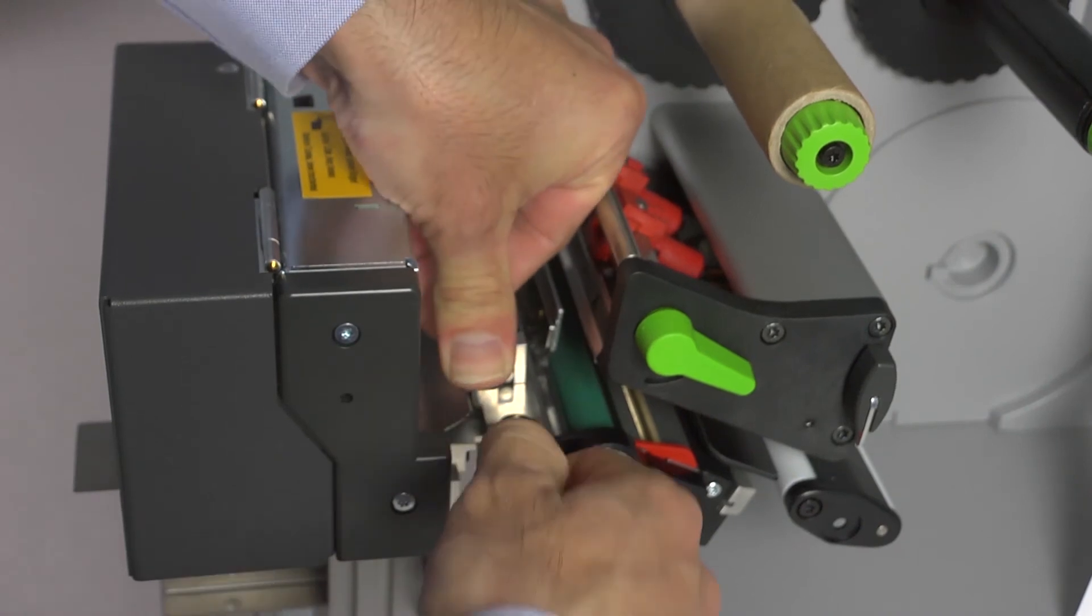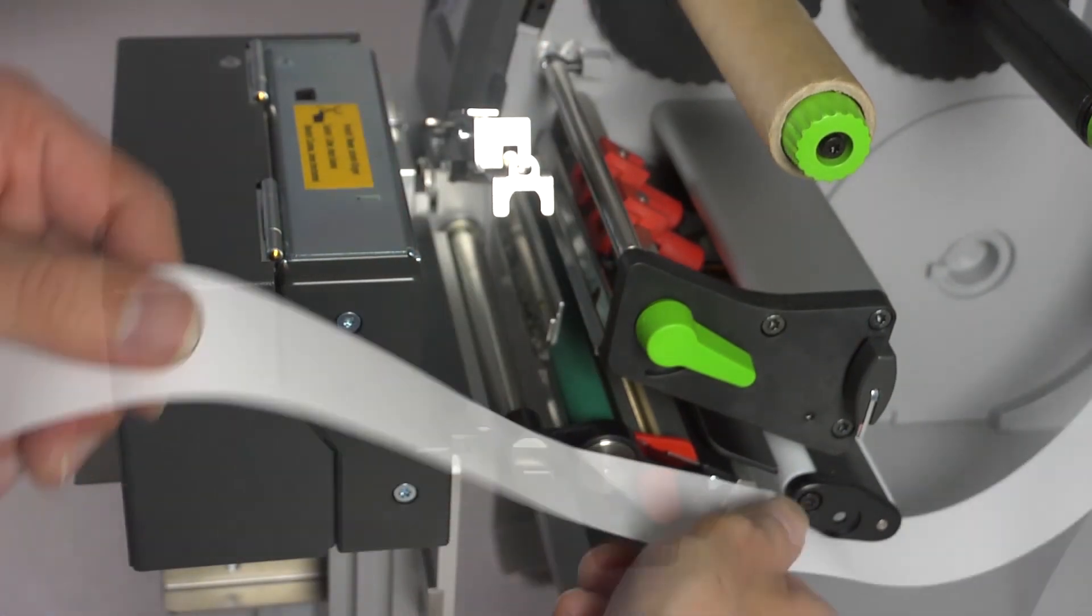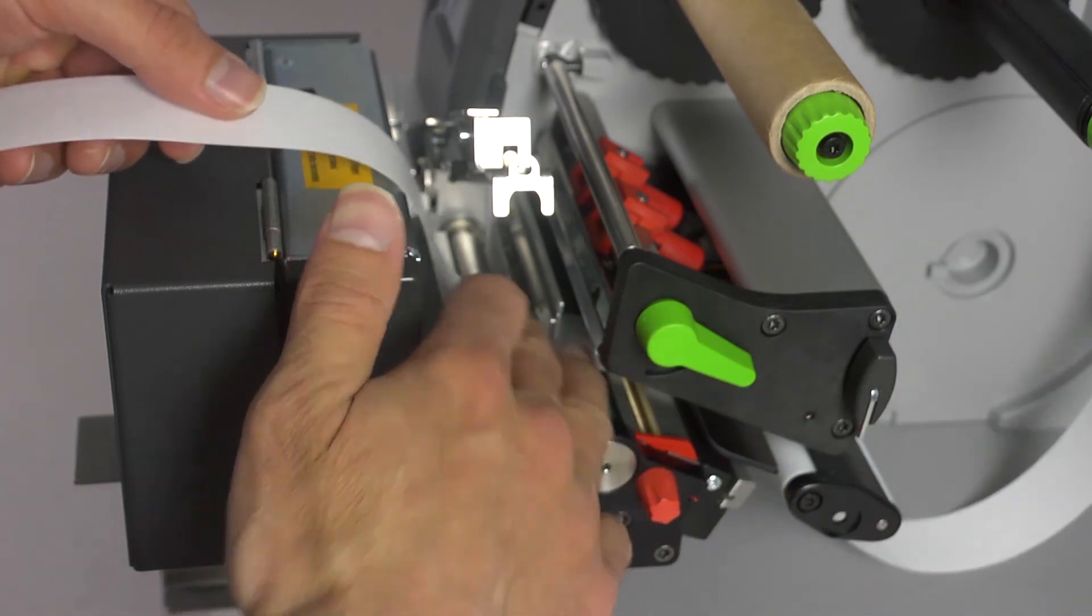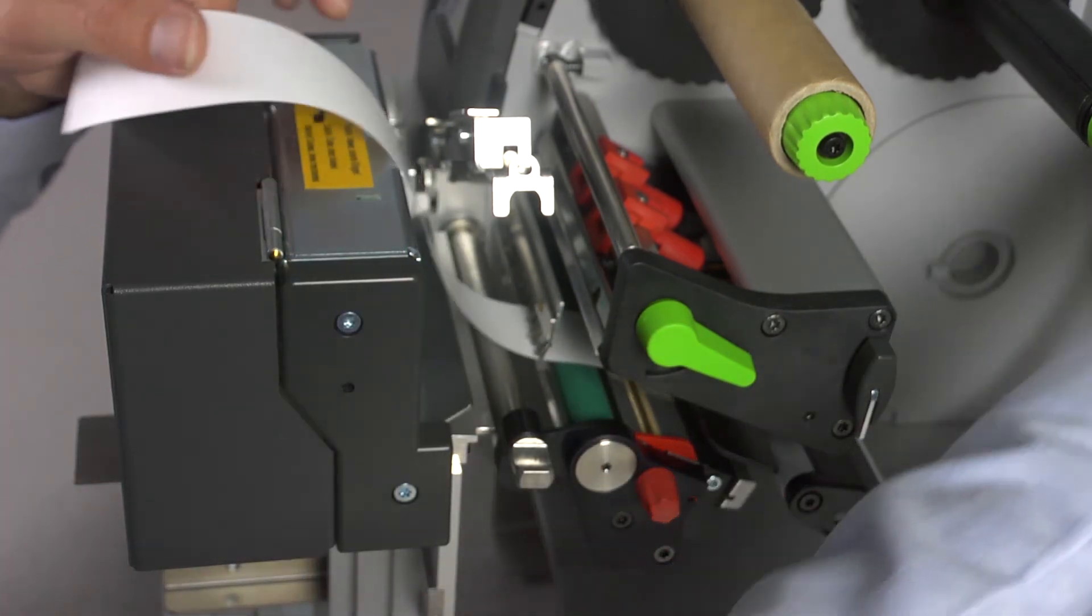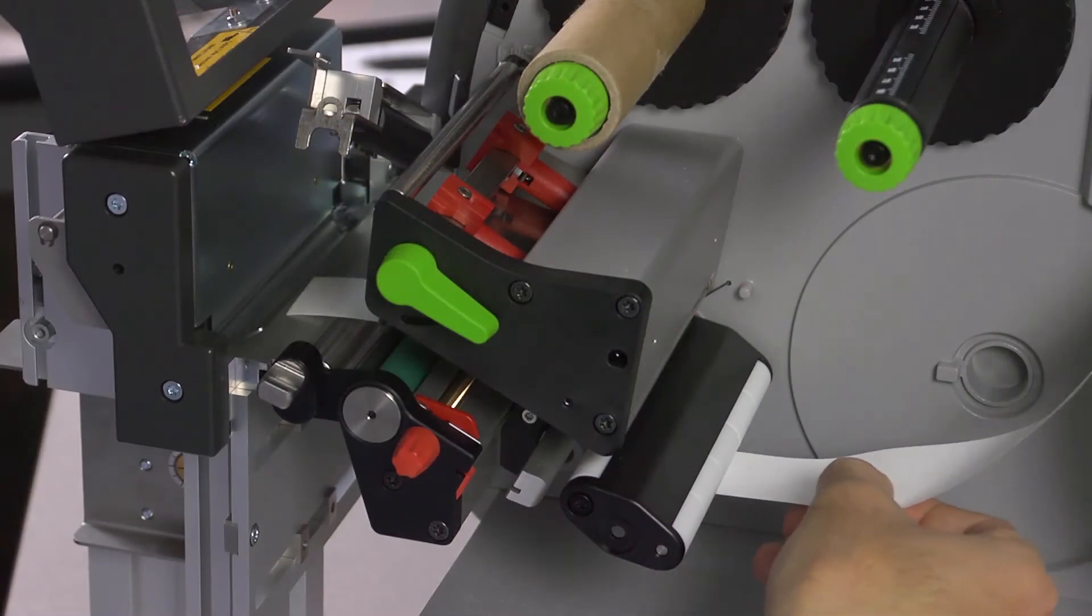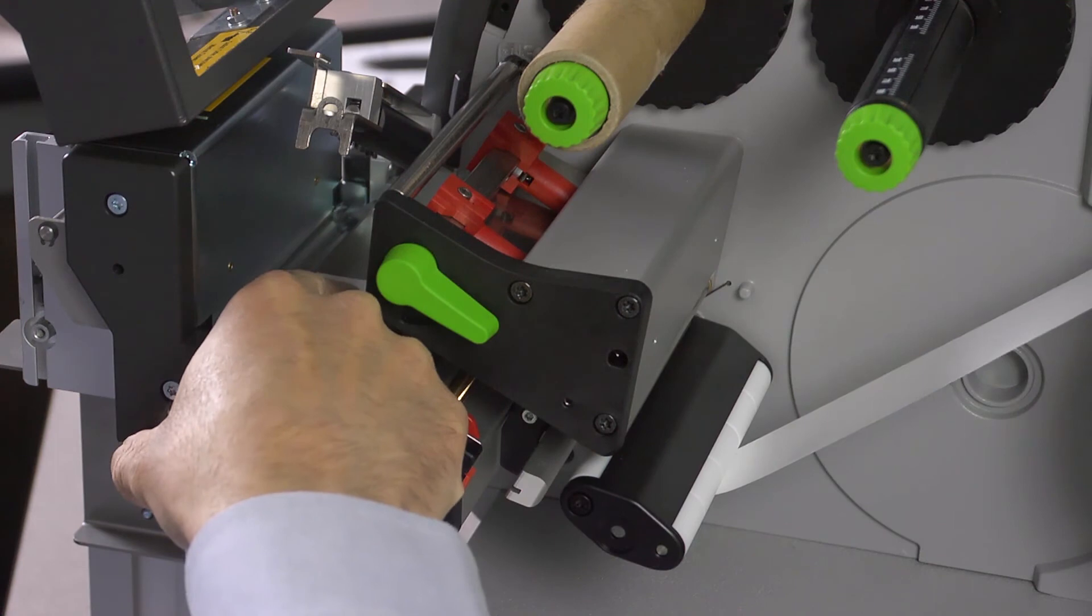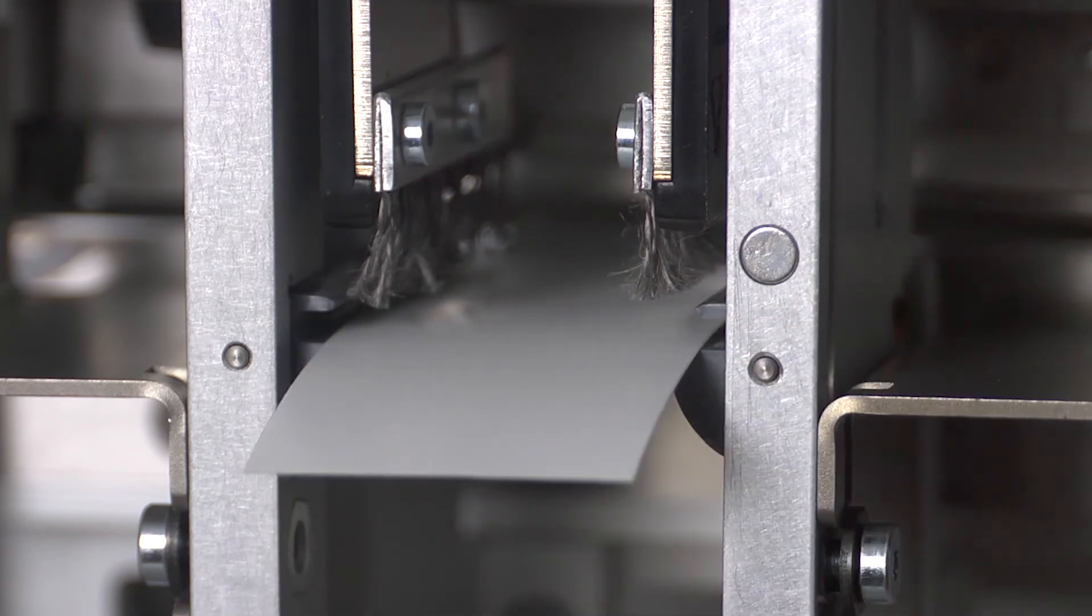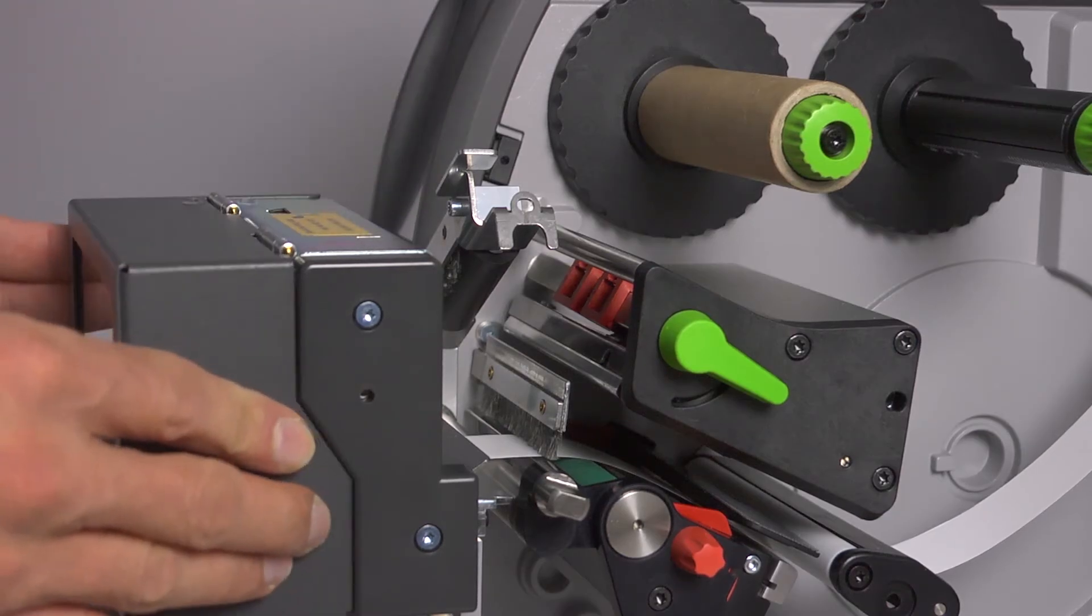Now open the separator. Grasp the tag and feed it under the printhead. Feed the material through the front of the printer and through the cutter stacker. Close the cutter stacker and the separator.